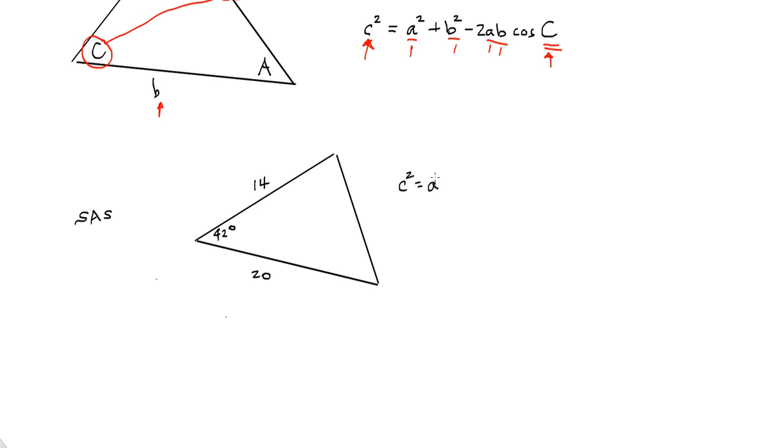The C squared equals A squared plus B squared minus 2AB cosine C. So the angle we're going to find, or excuse me, the side we're going to find is going to be the opposite angle to that side. Excuse me, one more time. The side we're going to find is opposite the angle we are given in the problem.